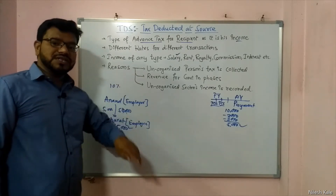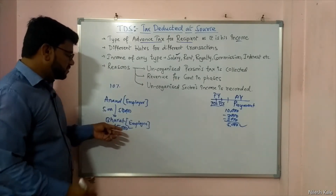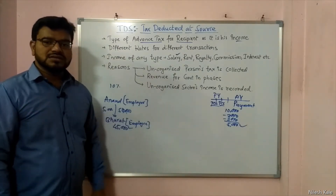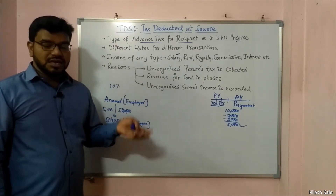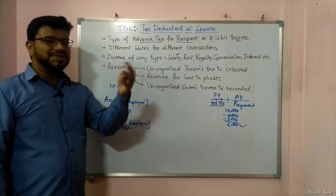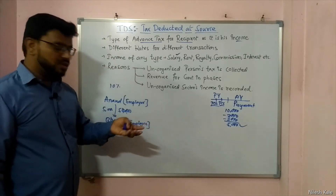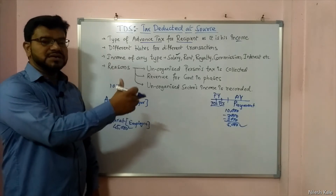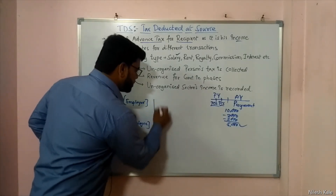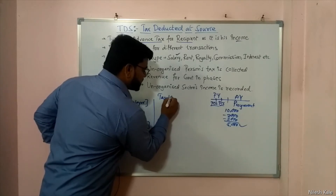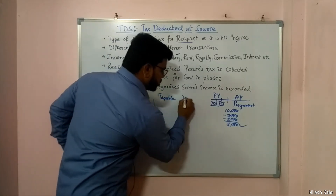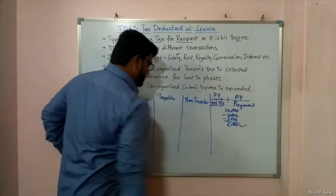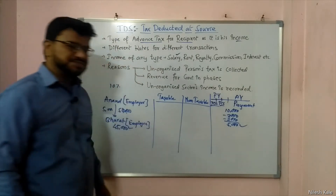Bharat gets 45,000 after taxes. Bharat might say: I don't have income, I don't file a tax return — will I get this 5,000 back or not? That is the question. There can be another case where Bharat is a taxable person and files returns. I will take two cases: where Bharat is a taxable person and where Bharat is a non-taxable person.